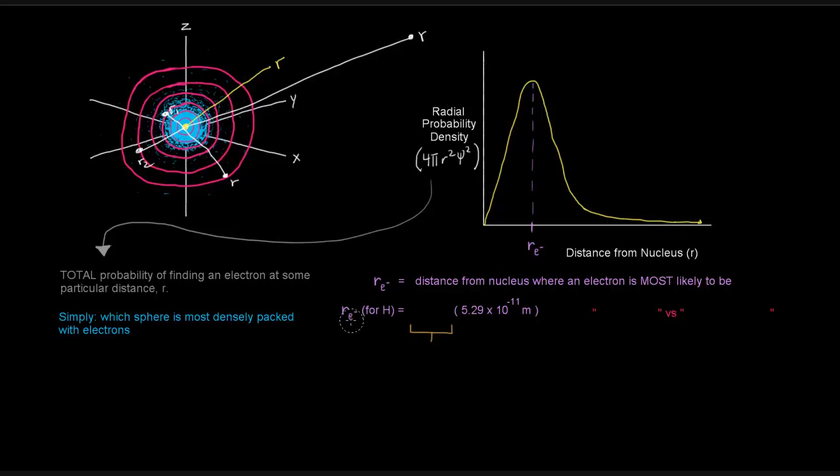Now, for hydrogen, that value is 0.529 angstrom, or 5.29 times 10 to the negative 11 meters. Now, this value was actually Bohr's orbit distance from the nucleus. And Bohr was kind of onto something. But the issue with what Bohr said is that Bohr said that the electron orbited at this distance away from the nucleus all the time, whereas the quantum mechanical model says that that's where the electron spends most of its time.